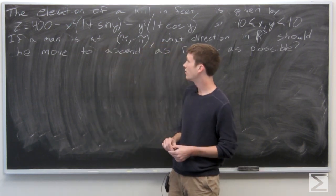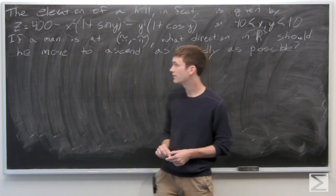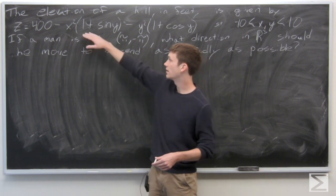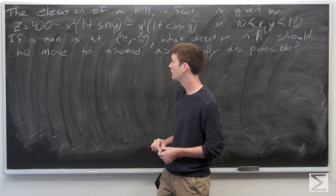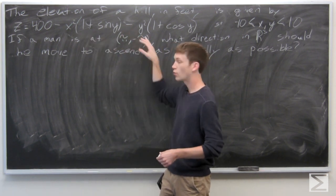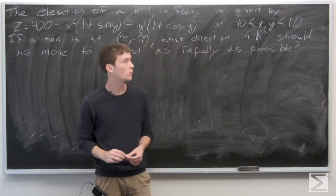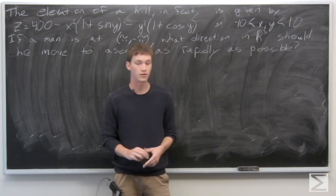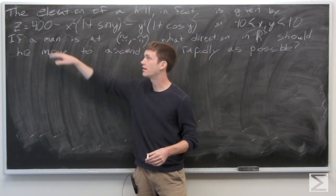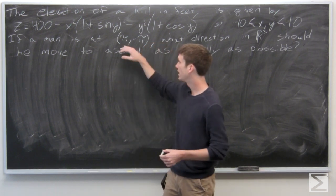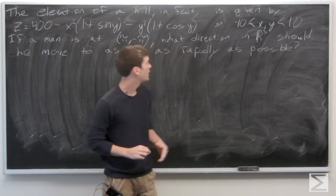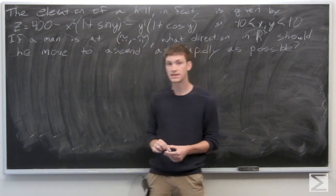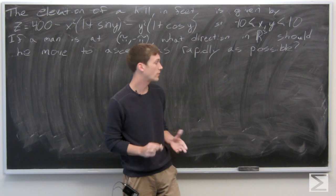In this problem we're told that the elevation of a hill in feet is given by the function z equals 400 minus x squared times the quantity 1 plus sine of y, minus y squared times the quantity 1 plus cosine x, such that the absolute values of x and y are less than 10. We're told that a man is at the point (π, -π), and we want to find the direction in R3 in which he should move in order to ascend as rapidly as possible.